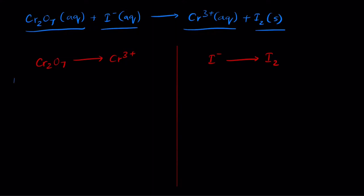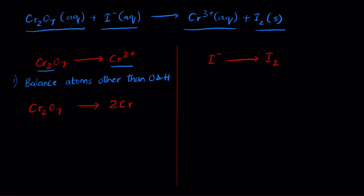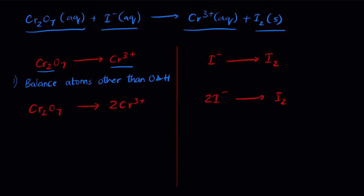Balance atoms other than oxygen and hydrogen. There are two chromiums on the left but one on the right, so: Cr₂O₇²⁻ → 2Cr³⁺. For iodine, there are two iodines on the right, so: 2I⁻ → I₂. Now all non-oxygen, non-hydrogen atoms are balanced.